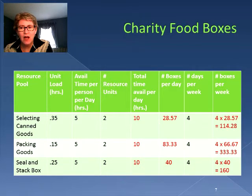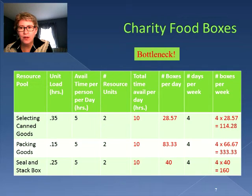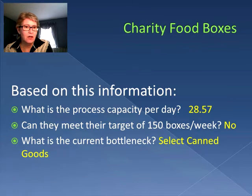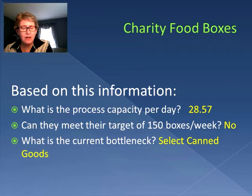Our smallest number of boxes per week is in selecting canned goods — we can only do 114.28. So that is our bottleneck. In answer to our questions: the process capacity per day is 28.57 boxes; they cannot meet their target of 150 boxes per week; and the current bottleneck is select canned goods.